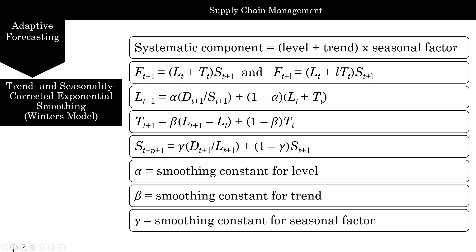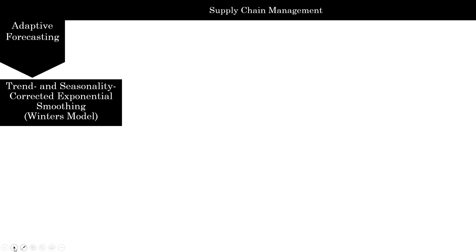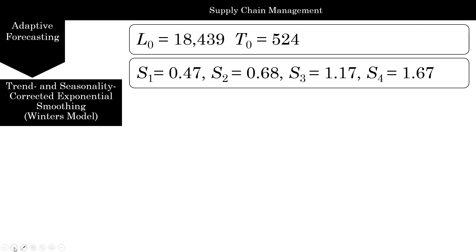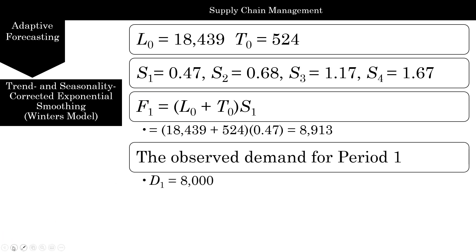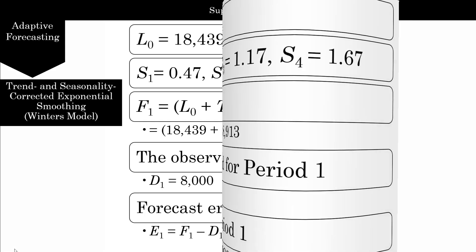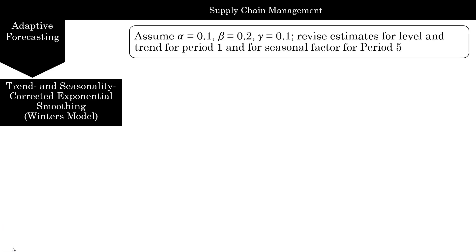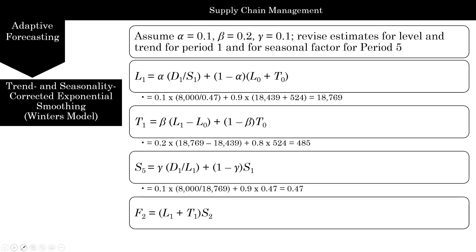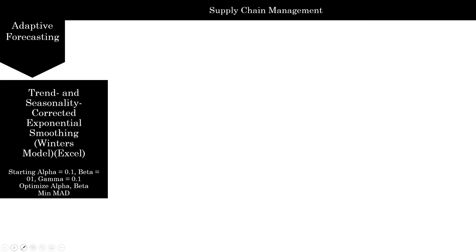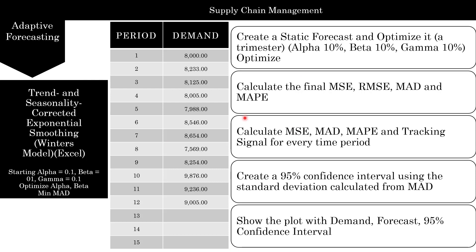We already discussed what alpha, beta, and gamma are. Here is an example from a toy problem where we're given the initial level, trend, and seasonal factors. We can find the forecast for the first time period, observe the demand, calculate the forecasting error, then use alpha, beta, and gamma to update level, trend, and seasonality. Let's go ahead and do this in Excel.